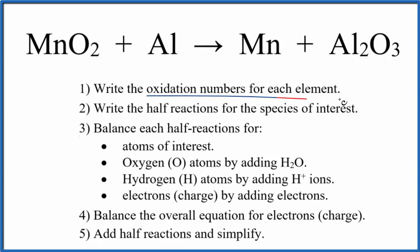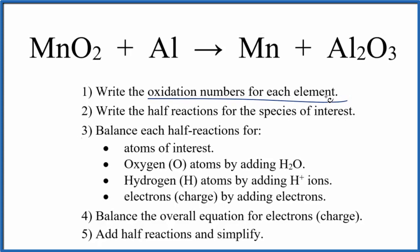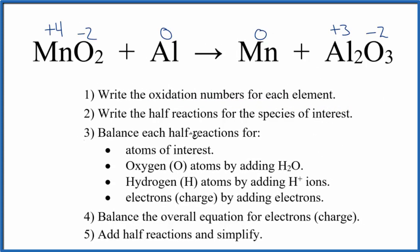First we need to write the oxidation numbers for each element. That looks like this. If you need help with that, there's a link in the description. Next we write the half-reactions for the species of interest. Those are the ones that have changed their oxidation numbers.